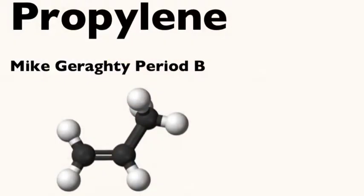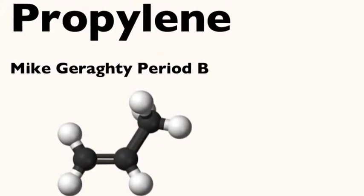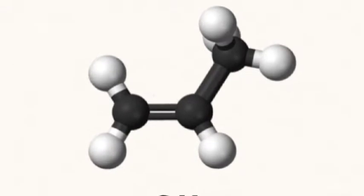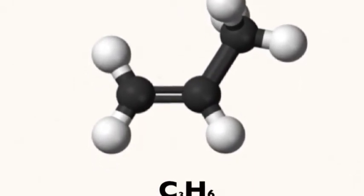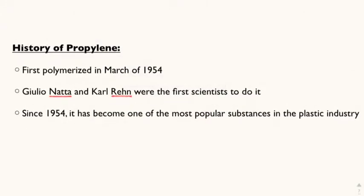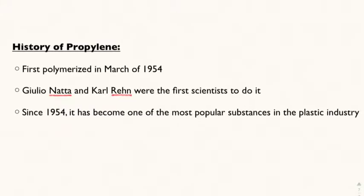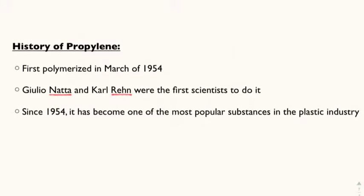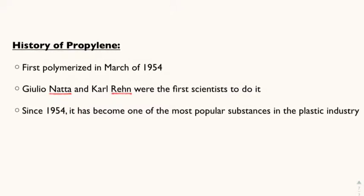Hi, my name is Mike Gary and I'm going to be talking to you about propylene. Propylene is an organic molecule with the formula C3H6. Though there was knowledge of the chemical, propylene was not polymerized until March of 1954 in Germany by two scientists named Giulio Natta and Carl Wren.